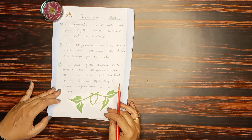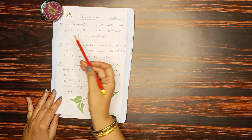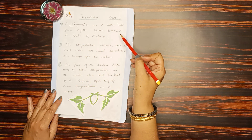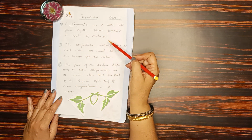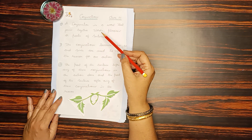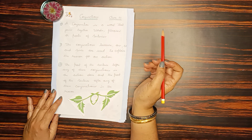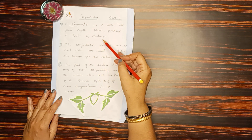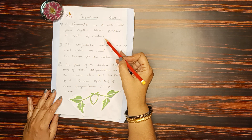Once again, what is a conjunction? A conjunction is a word that joins together words, phrases, or parts of sentences. As you all know, a word is a group of letters which gives a particular meaning. A phrase is a group of words. A sentence has a subject and verb and gives you a statement.